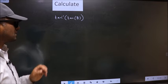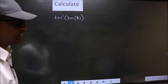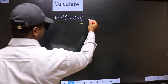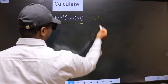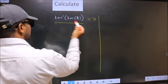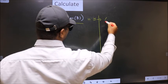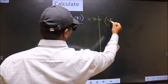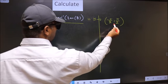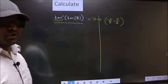Calculate tan inverse of tan 8. How do we calculate this? We should get the answer to this one. Let us take the answer to be y. The condition is y should lie in the range of tan inverse, which is minus pi by 2 to plus pi by 2. Our answer should lie in this interval.